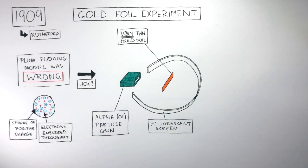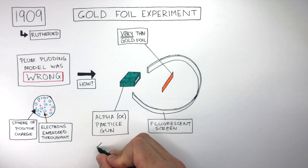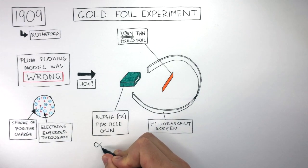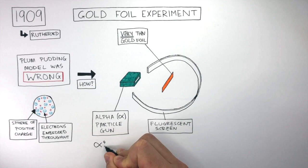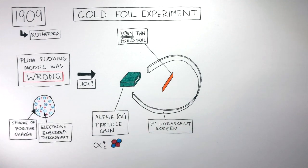To understand this experiment, we need to first start with the alpha particle gun, and we need to know what an alpha particle actually is. This is the symbol of an alpha particle, which is taken from the Greek alphabet. An alpha particle has a mass number of 4 and an atomic number of 2. It looks something like this.